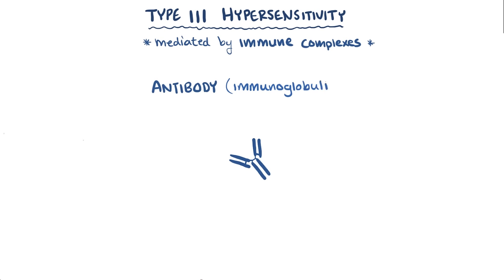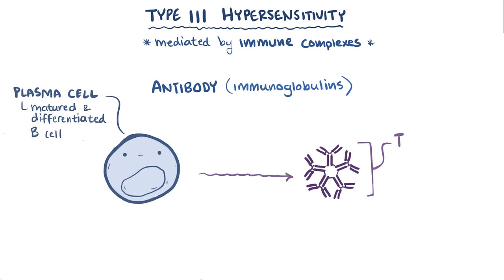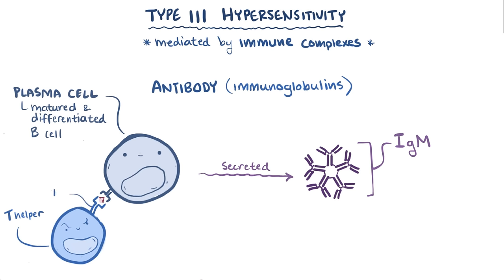Antibodies, sometimes called immunoglobulins, are produced by plasma cells, which are basically fully matured and differentiated B cells. Initially these cells make IgM, which can be secreted or bound to the plasma cell surface where it acts as a B cell receptor. When a B cell undergoes cross-linking of two surface-bound IgMs, it then takes up the antigen and presents a piece of it to T helper cells via T cell receptor to the MHC class II molecule, presenting the piece of the antigen, along with co-stimulatory molecule CD4.